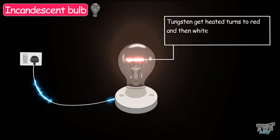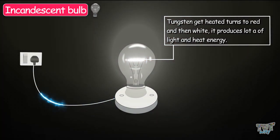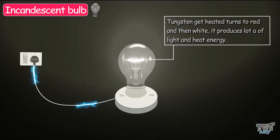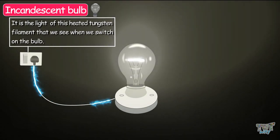And as the tungsten gets heated and turns red and then white, it produces a lot of heat and light energy. It is the light of this heated tungsten that we see when we switch on the bulb.